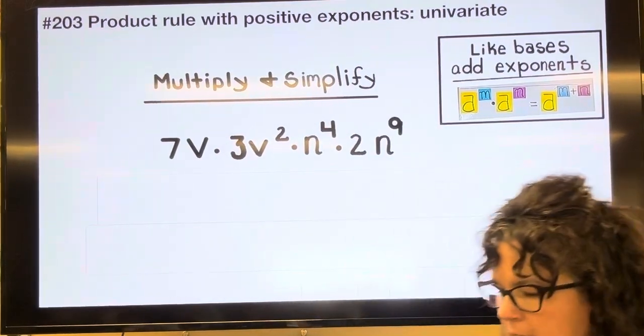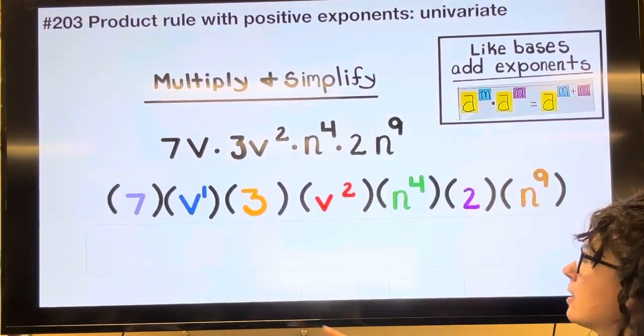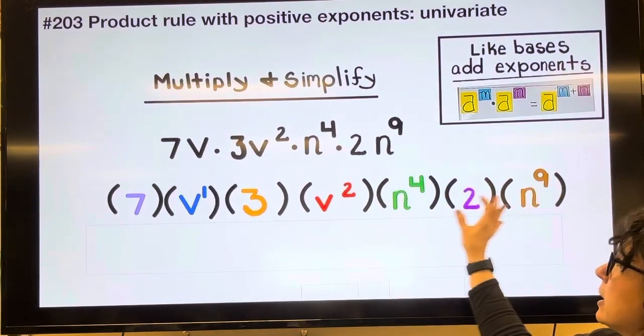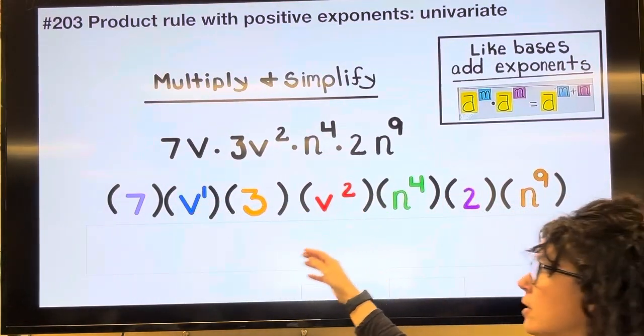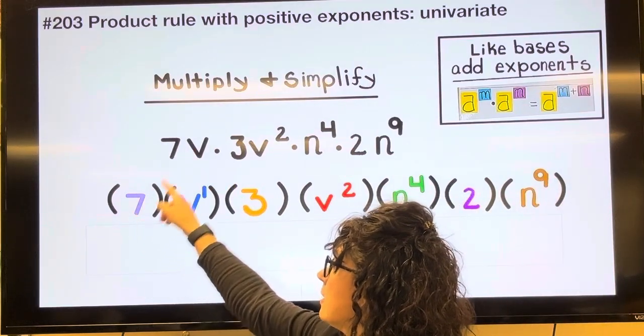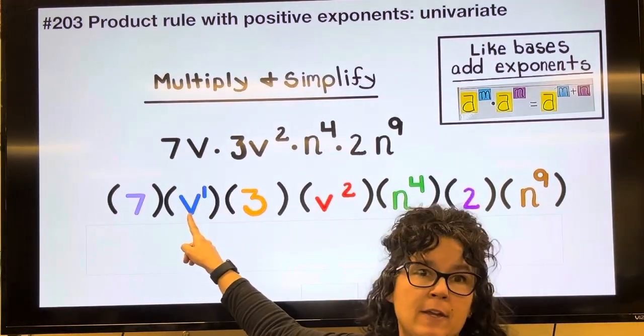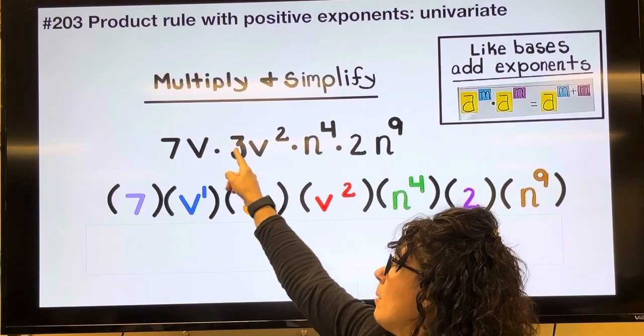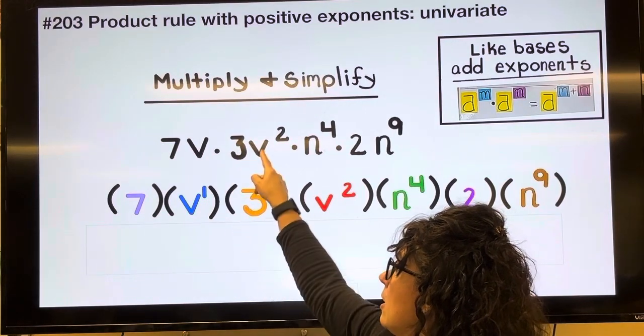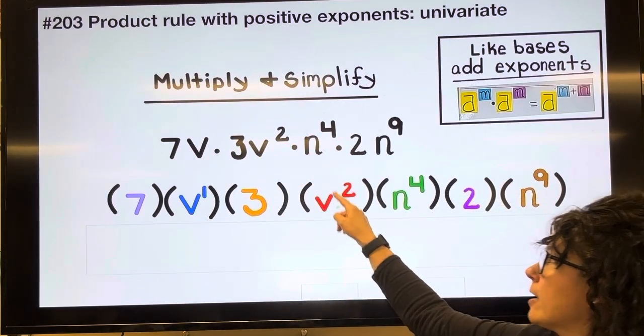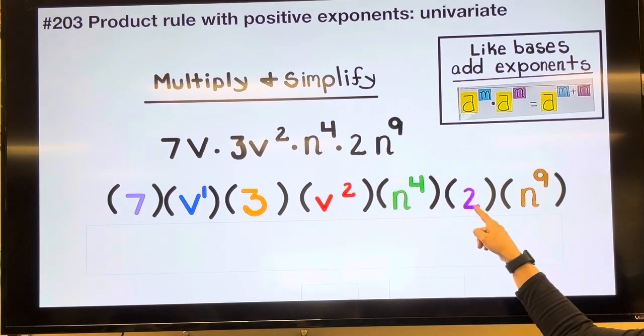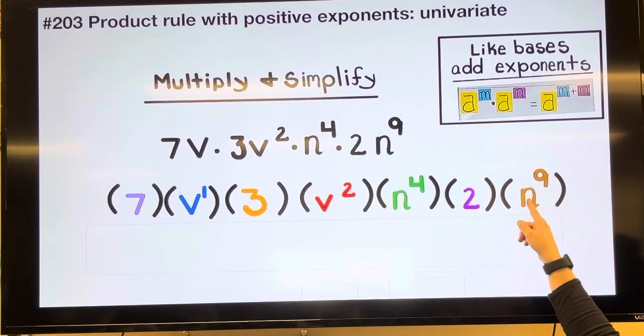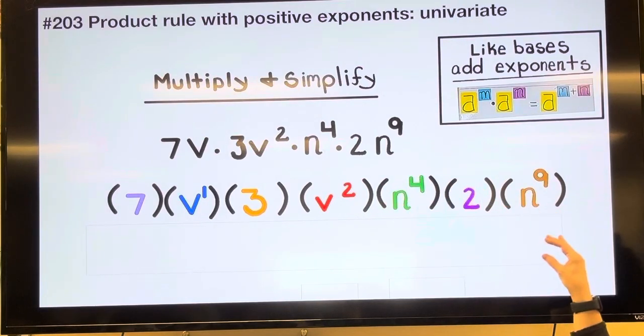Now all I've done here to start with is to really show what pieces are being multiplied together. We have 7 multiplied by V and that V is to the first power multiplied by 3 multiplied by V squared times N to the fourth multiplied by 2 and multiplied by N to the ninth. We have a string of multiplication.